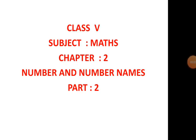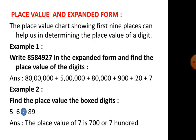Welcome back students. We are continuing our chapter on number and number names. Today we will be discussing place value and expanded form. We already covered the place value chart, which shows the first nine places that help us determine the place value of a digit: ones, tens, hundreds, thousands, ten thousands, lakhs, ten lakhs, crores, and ten crores. This was discussed in our previous video.